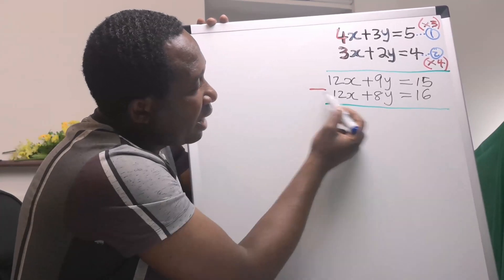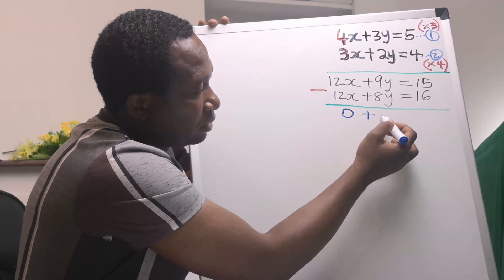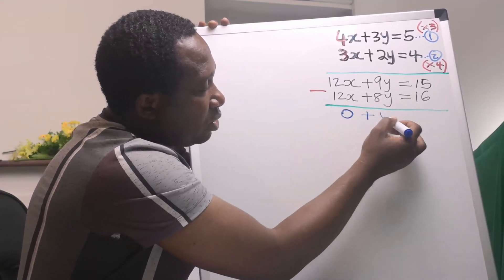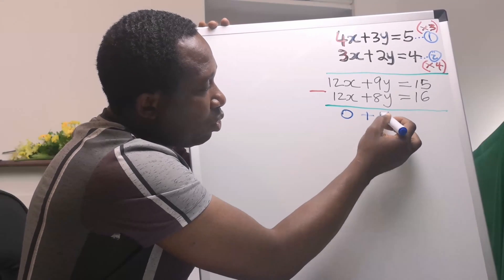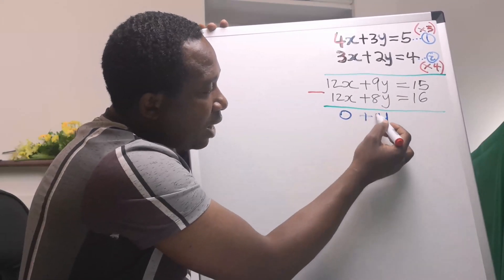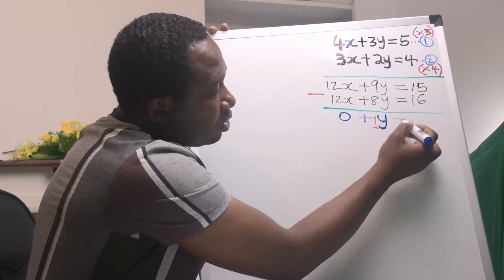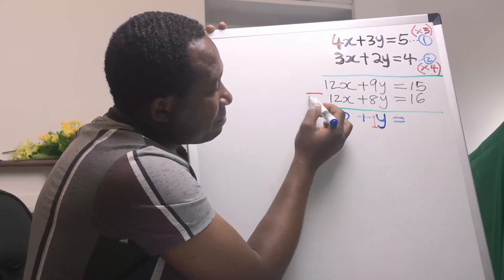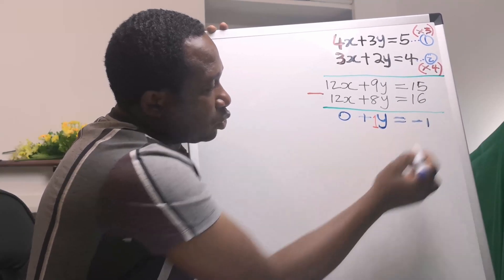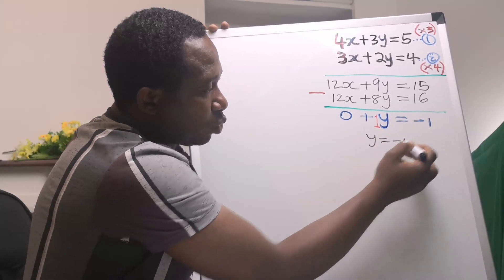Next, 9 minus 8 gives you 1 — that is, 9y minus 8y gives you 1y. Remember, whenever the coefficient is 1, we don't usually write it. On the other side, 15 minus 16 is minus 1. Hence, y equals minus 1.